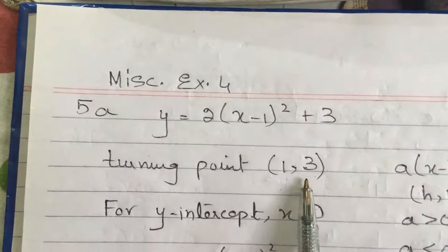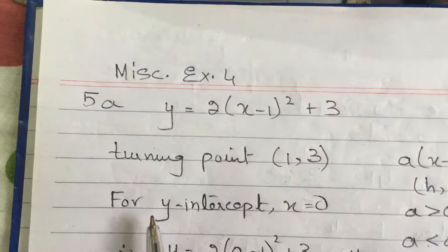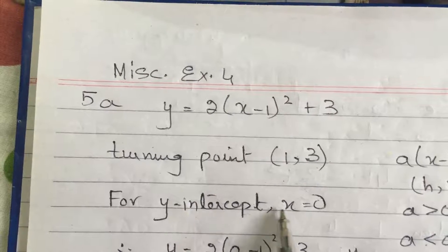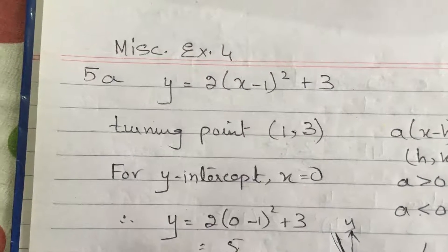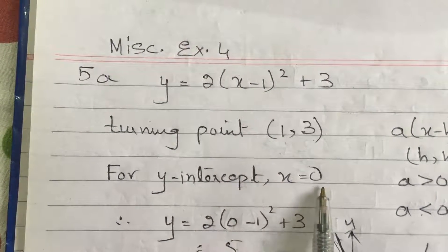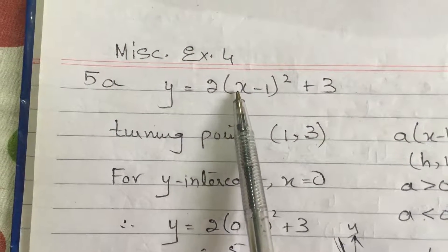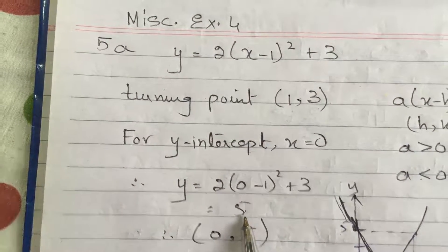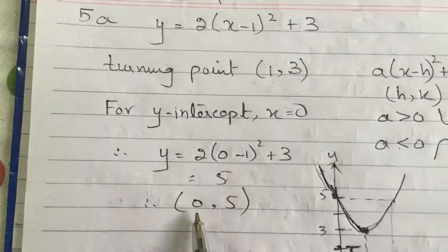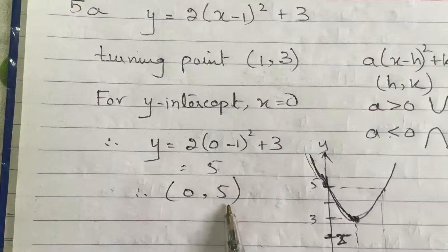To sketch the curve, I am finding out the y-intercept. For y-intercept, we know x is 0, because on the y-axis, the x-coordinate is 0. So we will substitute x equals to 0 in the equation of the curve over here, which will give us the y-intercept at 5. Therefore, the interception at y-axis is 0, 5.